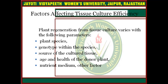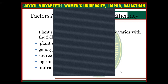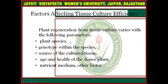Now we will discuss the factors affecting tissue culture efficiency. Plant regeneration from tissue culture varies with the following parameters: plant species, genotype within the species, source of the culture tissues, age and health of the donor plant, and nutrient medium. These factors can delay or cause premature development of the plant.